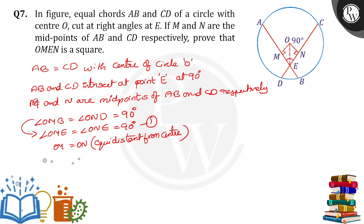Now what we will get? What are the two triangles we have to take? Triangle OME and triangle ONE. So in these two OM is equal to ON because they are equidistant from center.